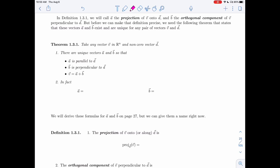Take any vector V in R^n and any non-zero vector D. There are unique vectors A and B so that the three properties from the picture: A is parallel to D, B is perpendicular to D, and V equals A plus B.